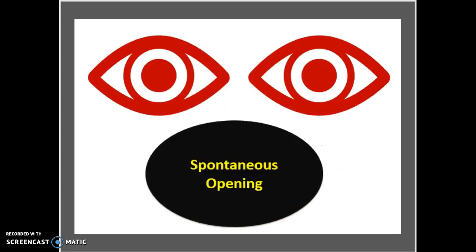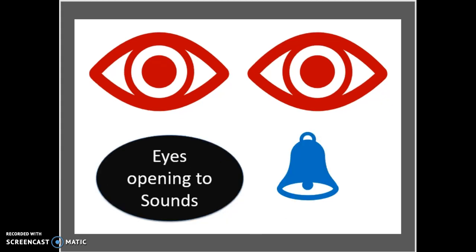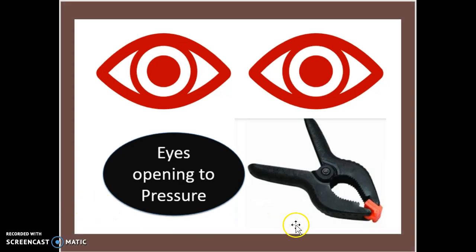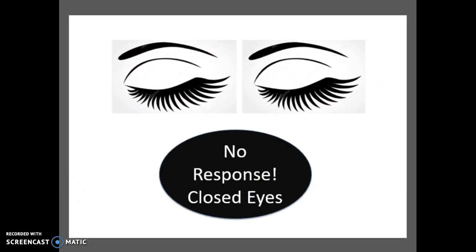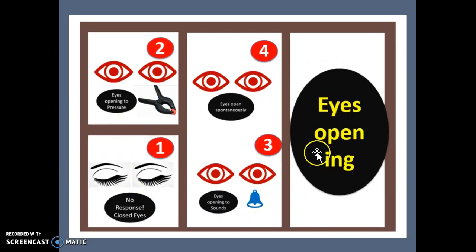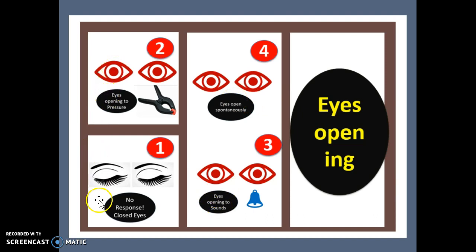For the eye test, the first criterion is spontaneous opening, which scores a 4. The second is opening to any sound, scoring a 3. The third is opening of the eyes to pressure — any physical pain or pressure put on the body — scoring a 2. And the last is no response whatsoever, which scores a 1. So: 4 is normal, 3 is sound, 2 is pressure, and 1 is no response.